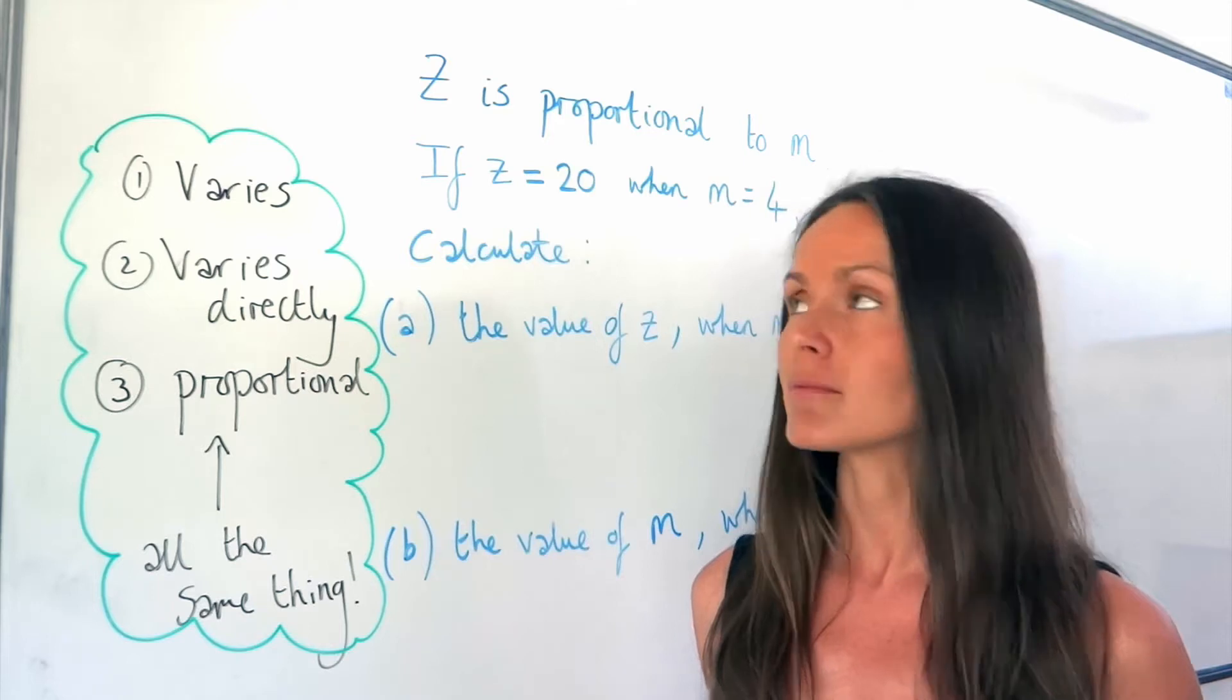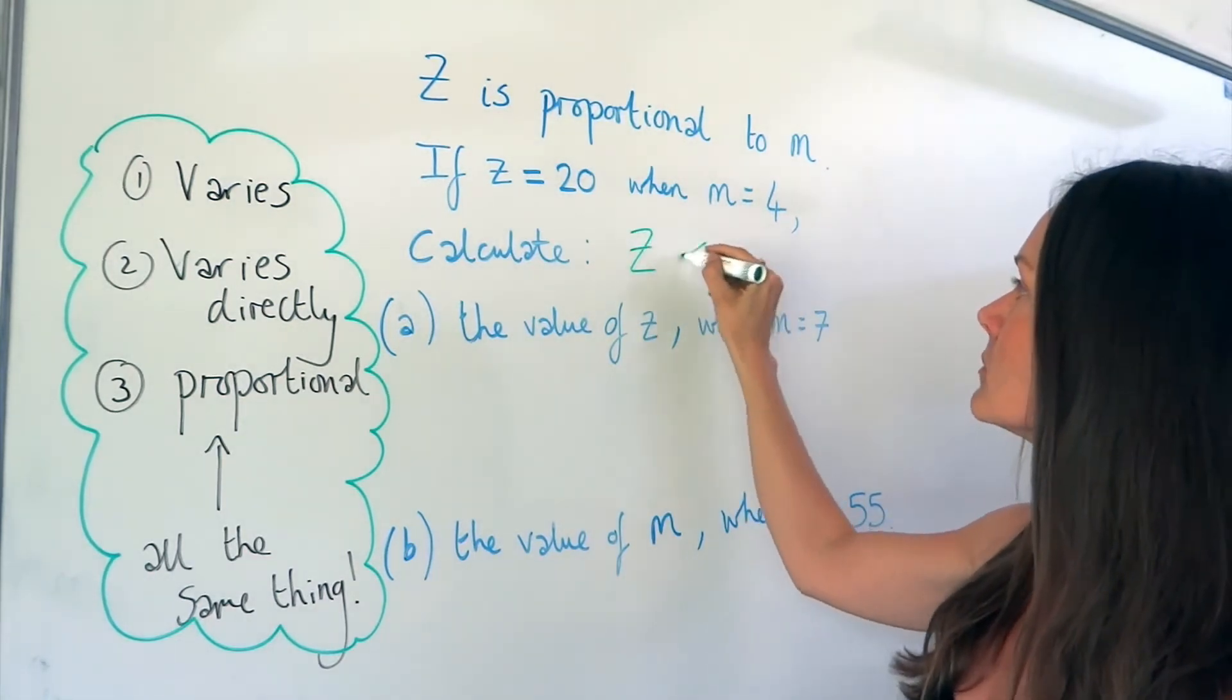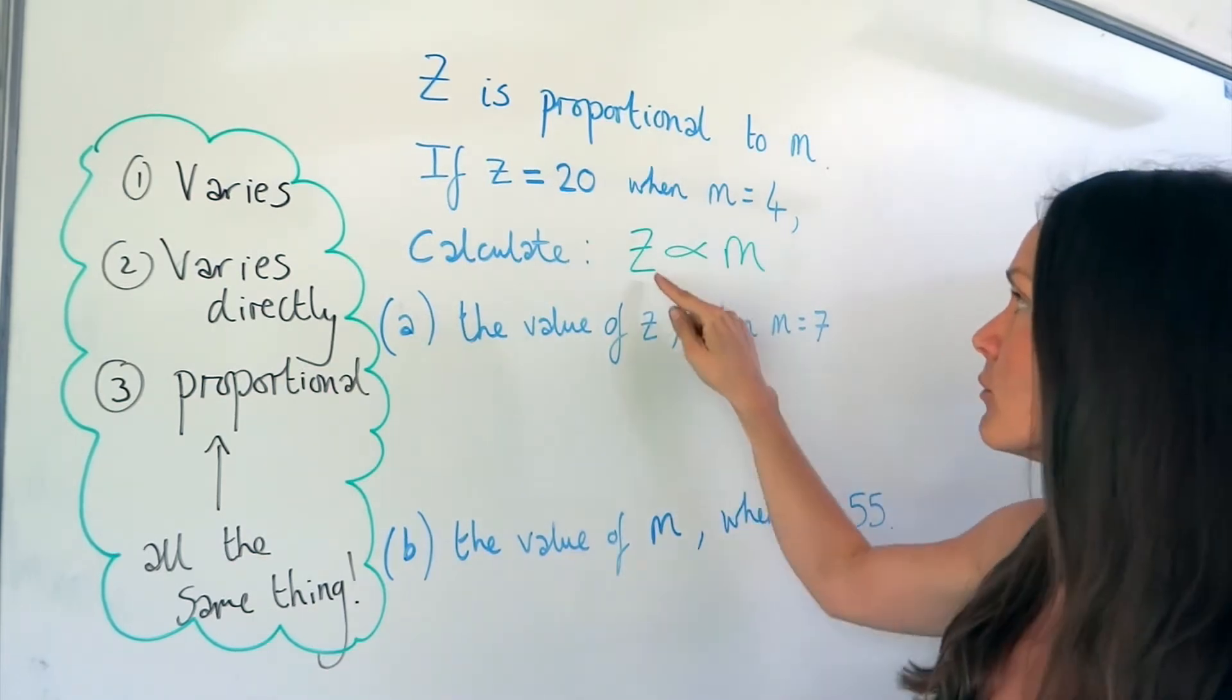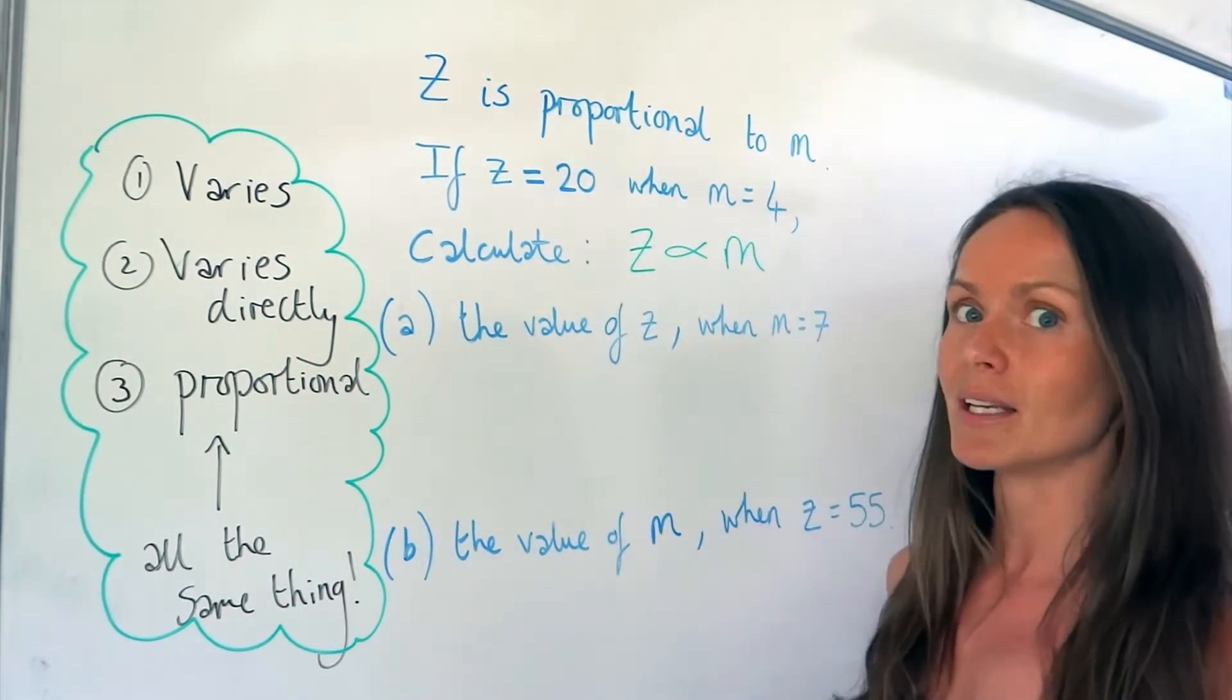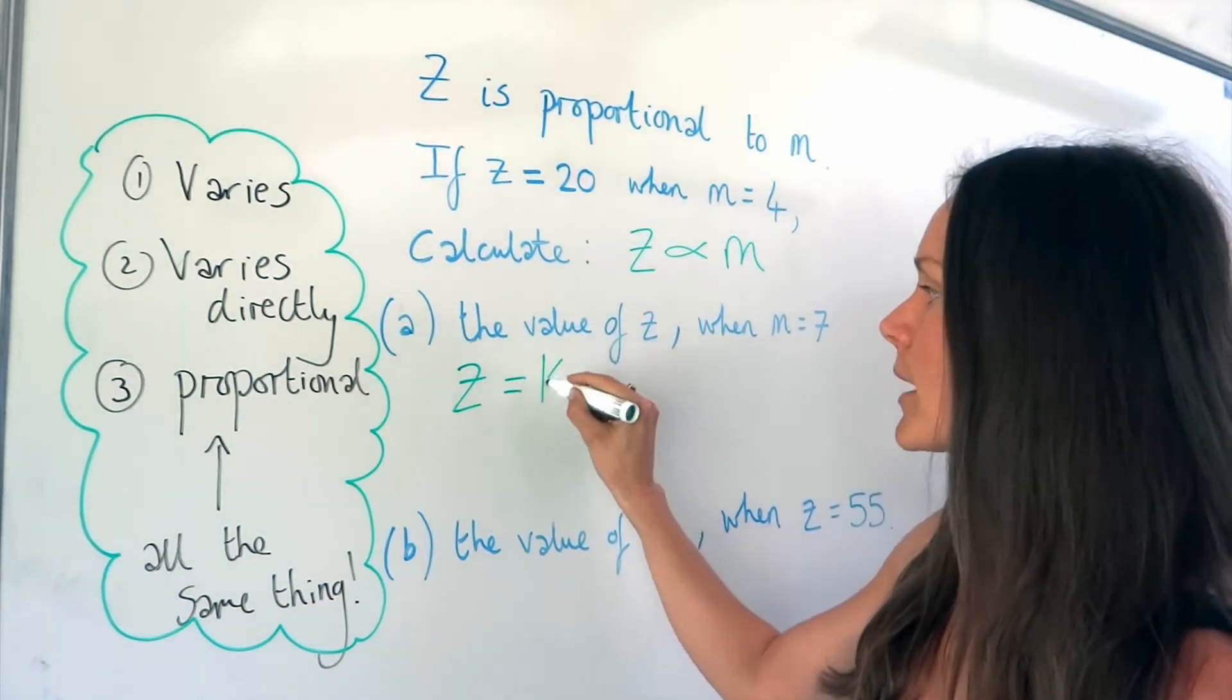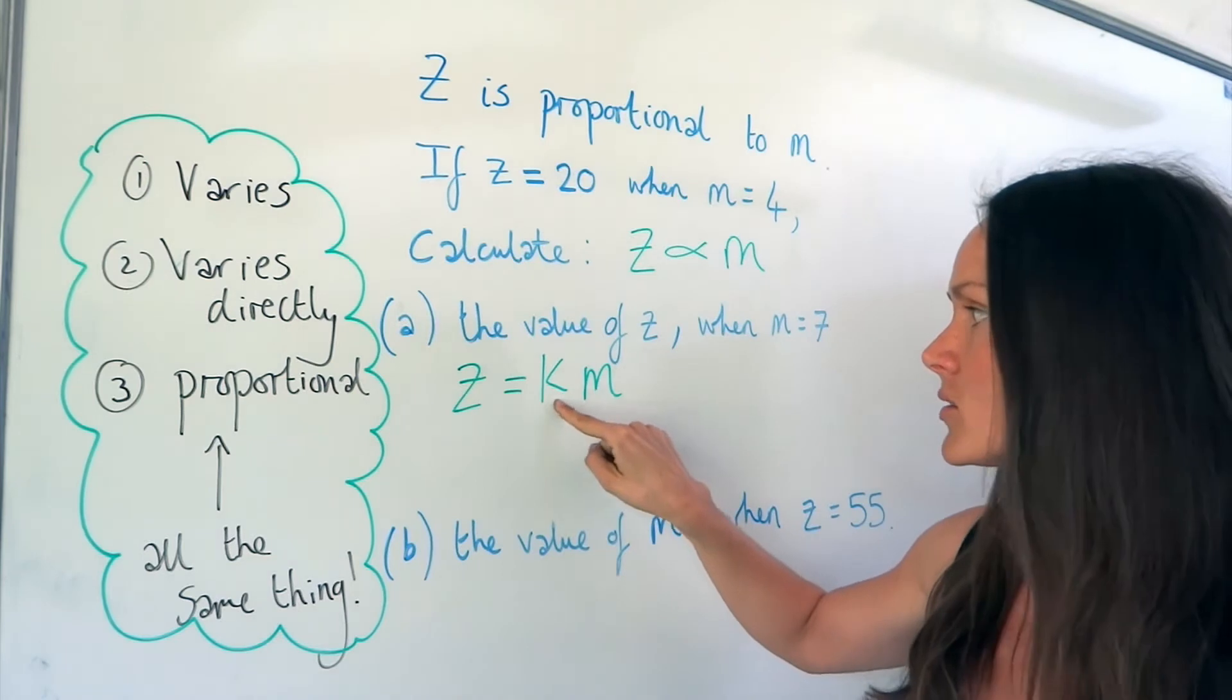So in this question, it said that z is proportional to m. For proportional, we use a funny symbol that looks a bit like a fish. I need to get rid of this symbol and write this as a real equation with an equal sign. To do that, I need to use the information given at the beginning of the question. When I change that symbol to an equal sign, I have to include a constant, and I'm going to call my constant k. So z equals km. When you change that symbol, you have to add in this constant value.